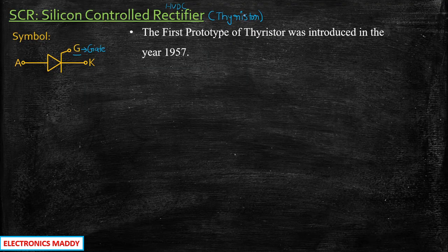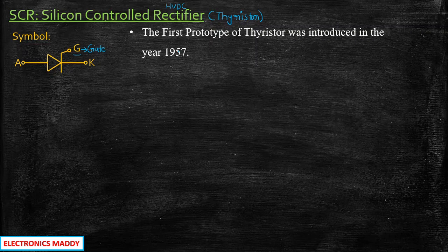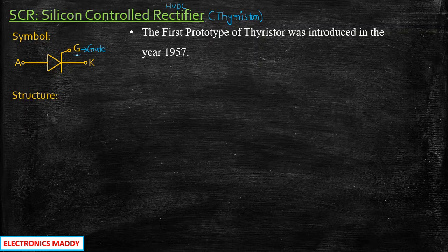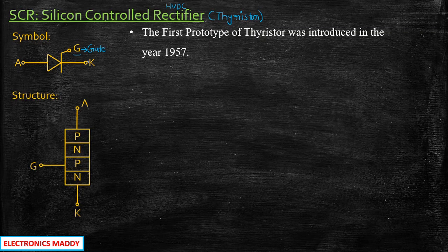The first ever prototype of thyristor was introduced in the year 1957. They wanted to make modifications to the diode and transistor after analyzing their properties, and came up with a device that would be able to control — that is why the gate terminal was initially introduced. Now let us look at the basic level structure of SCR, which has three terminals: anode, cathode, and gate.